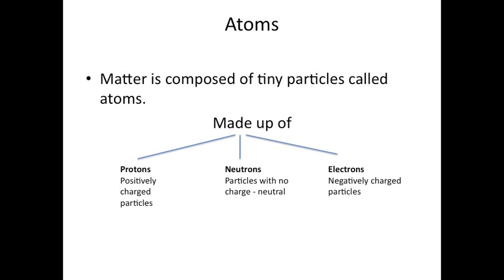These tiny particles within the atom contain charges, or in the case of neutrons, have no charge. Protons are positively charged—remember P for positive. Electrons are negatively charged, and neutrons have no charge. They're neutral.